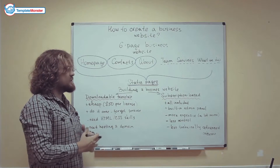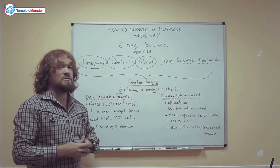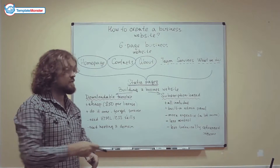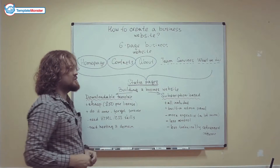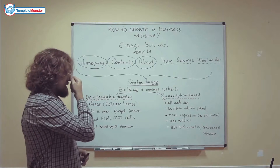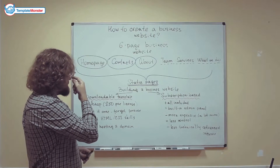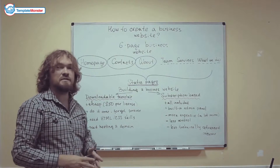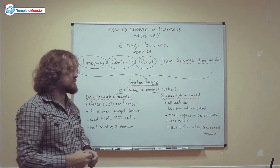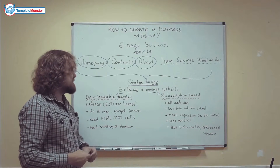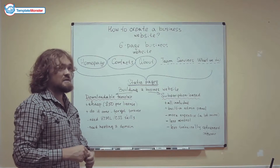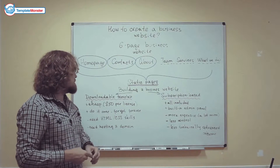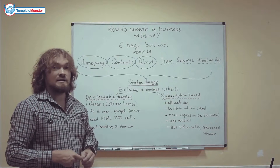Let's take a look at this from a costs point of view. There are two big ways of creating a website: from a downloadable template and with a subscription-based service. The downloadable template is obviously the cheapest way, because plain HTML and CSS templates are priced at around $50 per lifetime license.